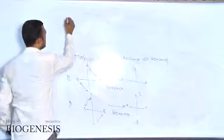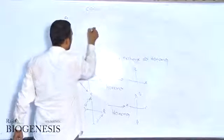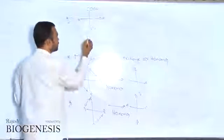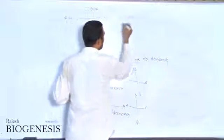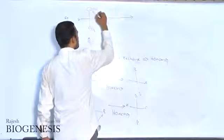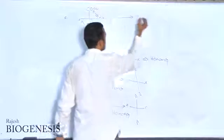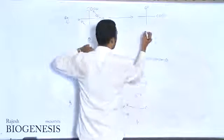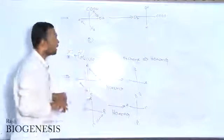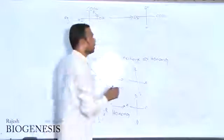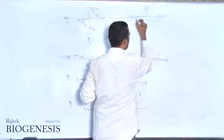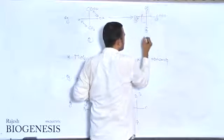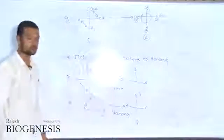Take one example for mutual exchange: this is COOH, this is CH3, this is OH, and this is H — this is nothing but lactic acid, and the configuration for this is R. Now go for mutual exchange — COOH and H are exchanged, and CH3 and OH are exchanged. After the mutual exchange: COOH is here, hydrogen is here, CH3 is here. Identifying the configuration — the least priority group is in vertical line, and the clockwise orientation belongs to R.